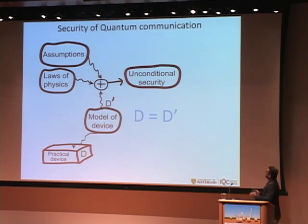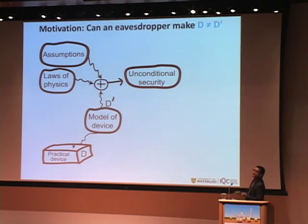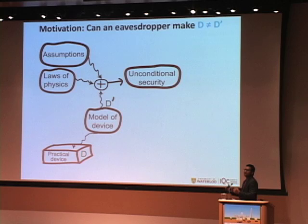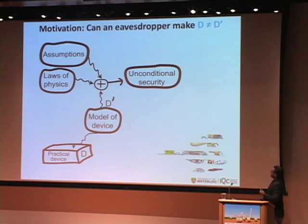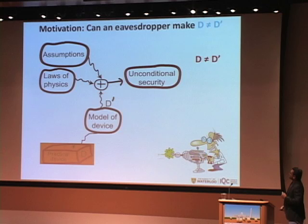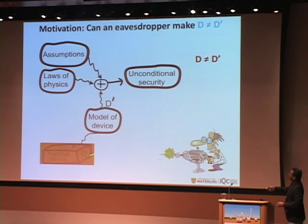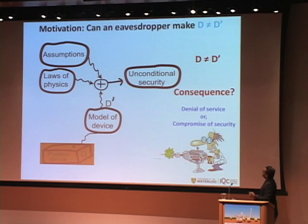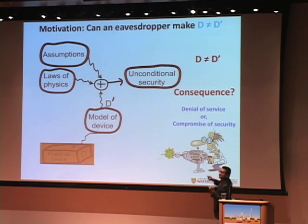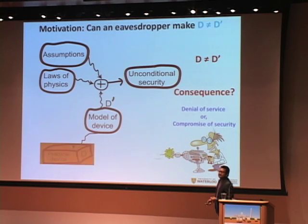In this work, we ask the question: what if an eavesdropper has the power to create a gap? That means after everything is characterized and we've made sure D equals D-prime, is it possible for an eavesdropper to create a gap from the channel? An eavesdropper can always stay in the line and shoot a high-power laser into our system to create a deviation. But the more specific question is: what would the consequence be? Would a deviation lead to a compromise of security, or would it lead to a denial of service?